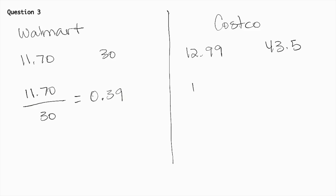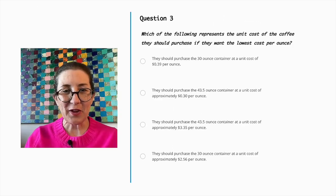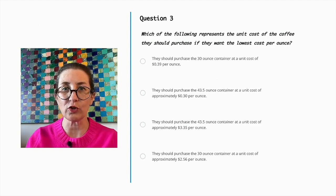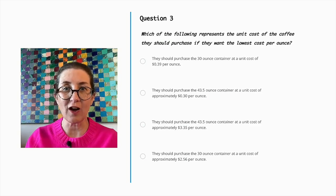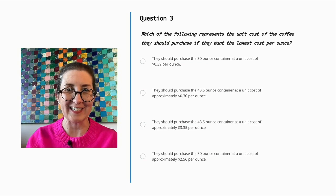At Costco, $12.99 over 43.5 ounces is approximately equal to $0.30 per ounce. So the coffee at Costco is cheaper. The coffee Eliza and Lucas should purchase in order to keep their costs to a minimum is the 43.5-ounce container at a unit cost of approximately $0.30 per ounce.